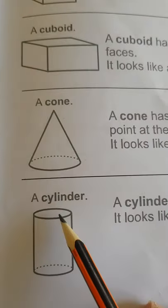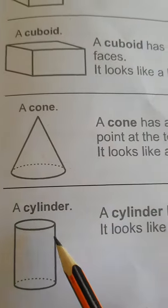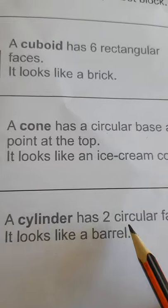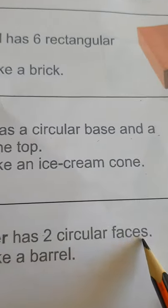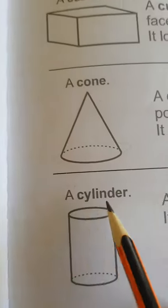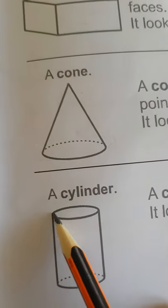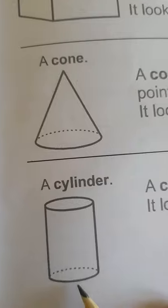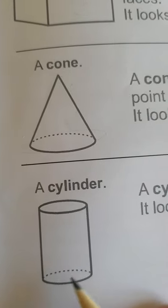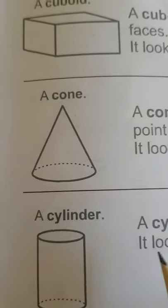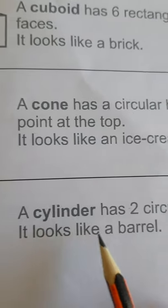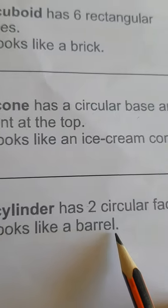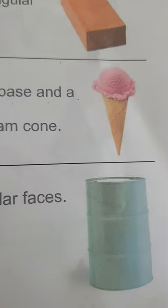And then we have a cylinder. A cylinder has two circular faces — one on top and one below. And it looks like a barrel. So now you're going to turn the page.